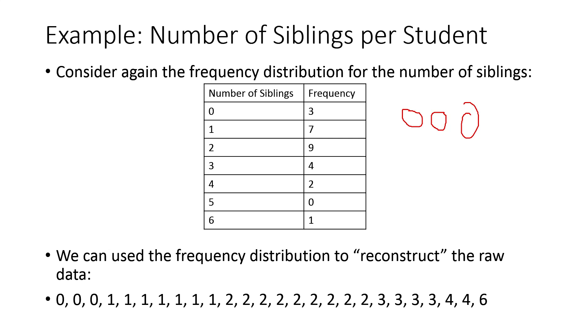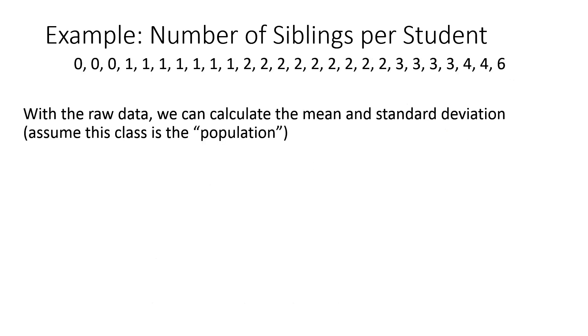And if I have the raw data, then from the stuff we learned when calculating summary statistics, I could certainly calculate the mean and standard deviation. So if I treat my class like a population, we could calculate the mean, add up all those values, divide by 26, and we would get an average number of siblings of 1.96. And similarly, we could use the computing formula, or possibly stat crunch, and we could calculate the standard deviation. We'd see there'd be a standard deviation of 1.34 siblings.